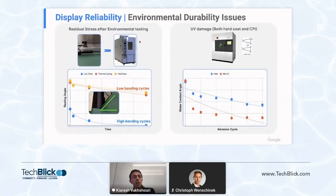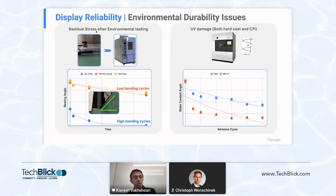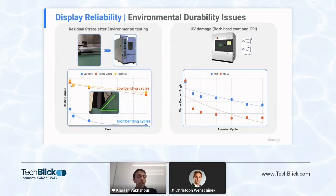In normal flexible display environmental testing, you fold the display statically in a chamber and look for delamination, cracks, and so on. However, I'm highlighting a hidden aspect: residual stress after environmental testing, which I'm capturing as a resting angle. You can see that at low temperature, the resting angle stays low — meaning residual stress is low and there's no bending performance challenge. But with high temperature or thermal cycling, residual stress builds up, resulting in a resting angle difference that can manifest as a bending performance problem. This is a critical point of attention for foldable and flexible displays.